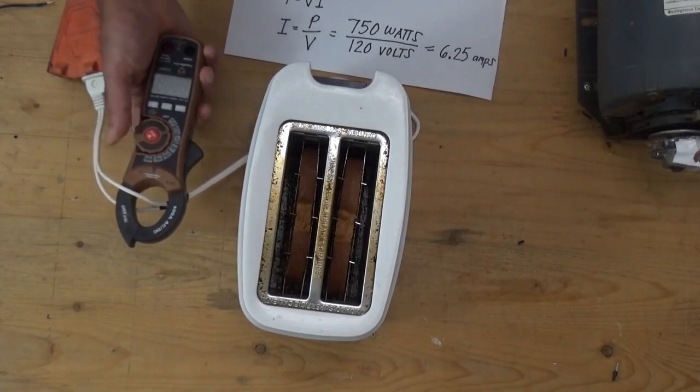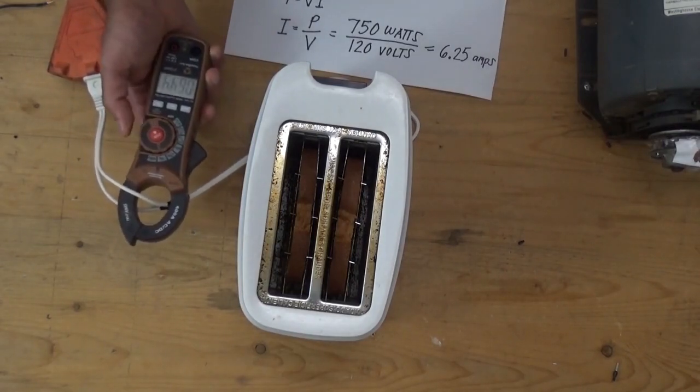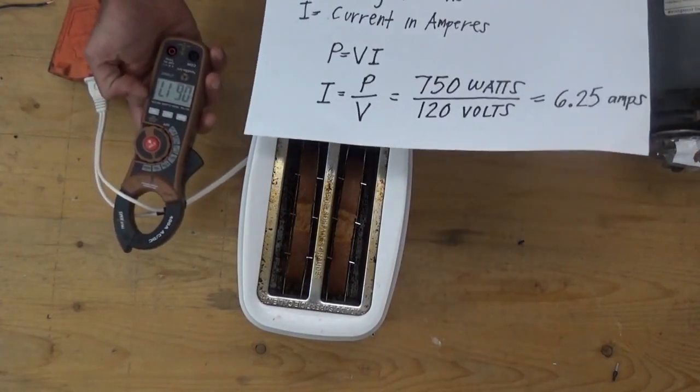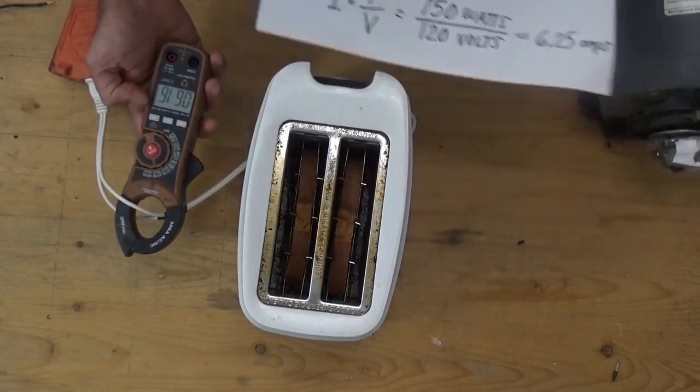Now I'm going to switch on the current. It reads 6.18 amperes, which is almost the same as 6.25. So we are correct.